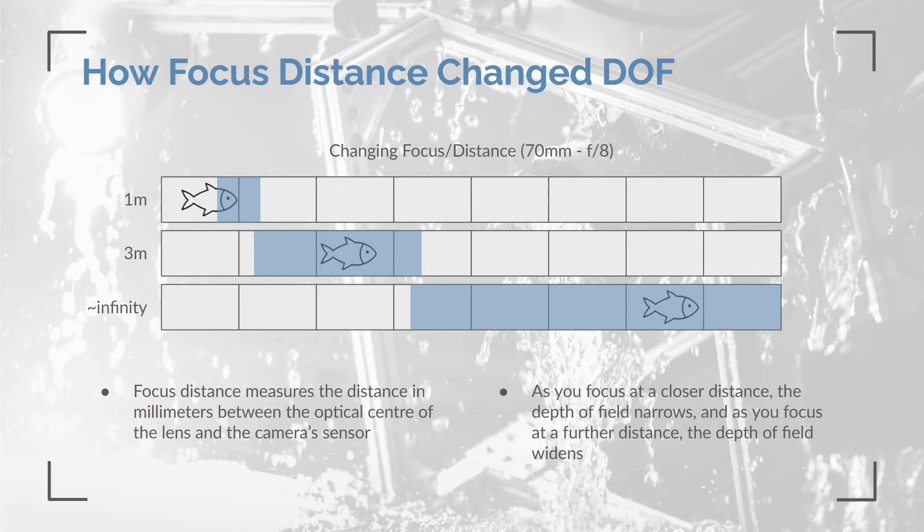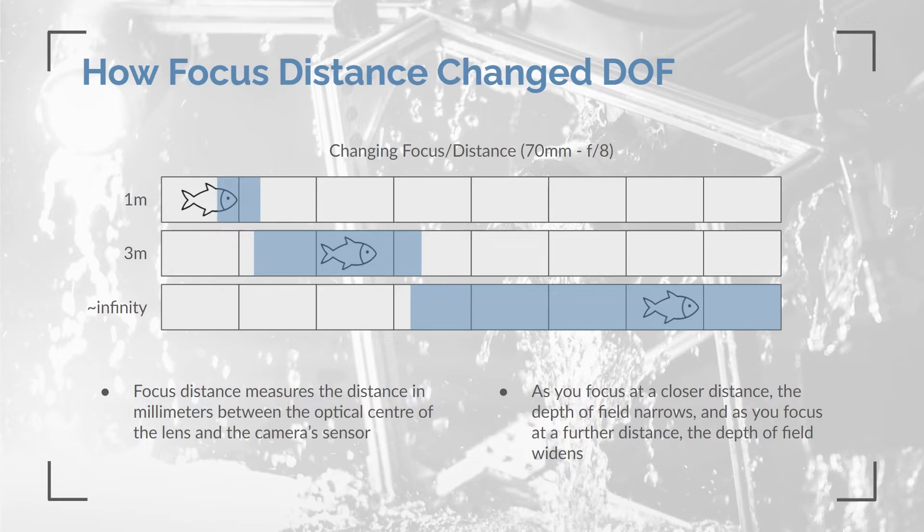The second parameter that affects depth of field is optical zoom. As the lens zooms in on the subject, this has the effect of narrowing the depth of field. From the point of view of the lens, zooming in moves the camera closer to the subject — so even if you're five meters away, the math treats this as one meter when you zoom in.